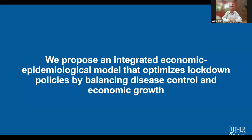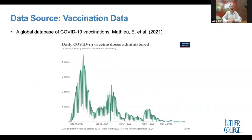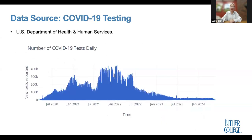For our project, we propose an integrated EE model that optimizes lockdown policies by balancing disease control and economic growth. We took data from various sources: US COVID-19 data from the Google Health Open Data Repository, vaccination data from a 2021 paper, and COVID-19 testing data from the US Department of Health and Human Services. Now I'll pass it over to Min so he can talk more about our project.